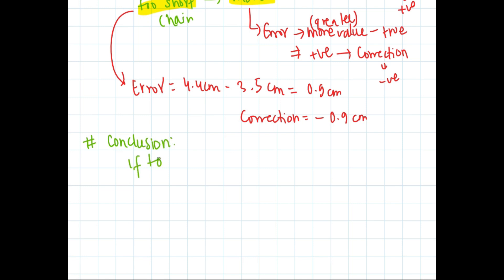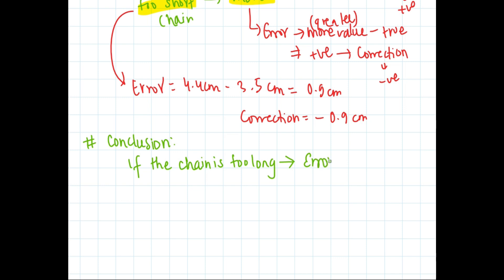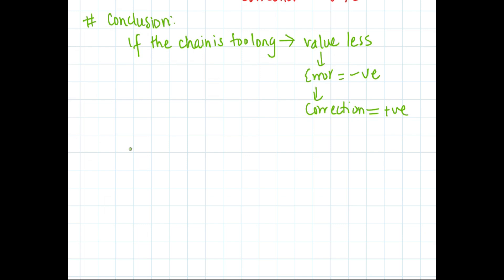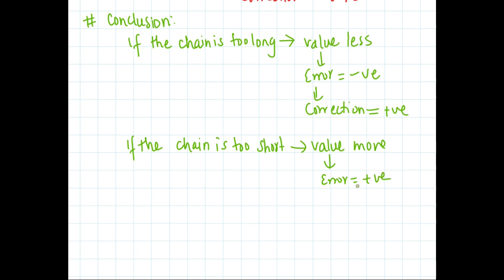So the conclusion is: if the chain is too long, the measured value will be less, error will be negative, and correction will be positive. Similarly, if the chain is too short, the measured value will be more, error will be positive, and correction will be negative.